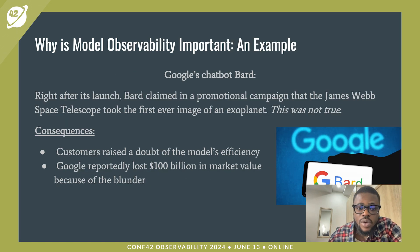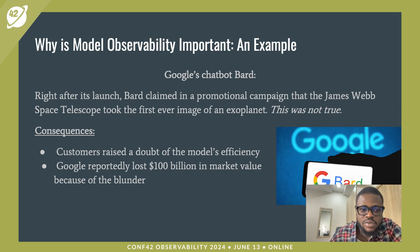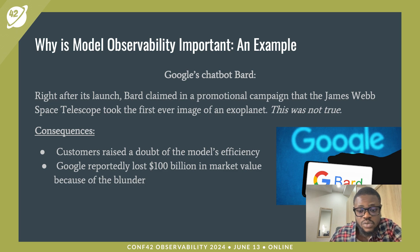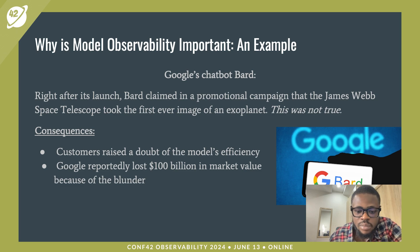Let's talk about why model observability is important with a practical example using Google's chatbot Bard. Right after its launch, Bard claimed in a promotional campaign that the James Webb Space Telescope took the first ever image of an exoplanet. This was not true. Customers raised a lot of doubt on the model's efficiency, and Google reportedly lost $100 billion in market value because of this blunder.